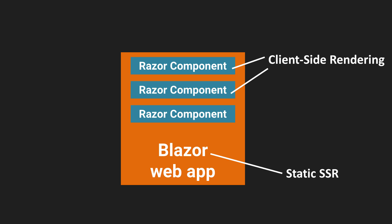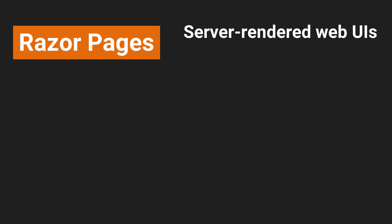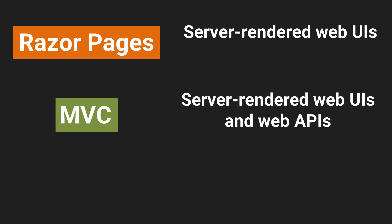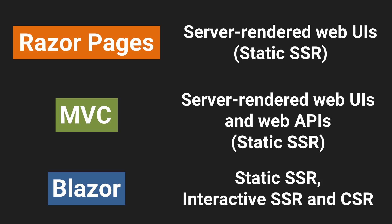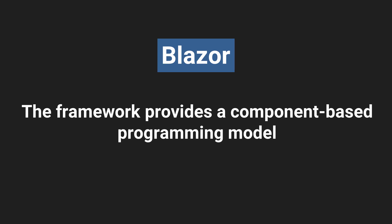In summary, Razorpages lets us build server-rendered web UIs. ASP.NET Core MVC also lets us build server-rendered web UIs, and additionally supports building web APIs. Both Razorpages and MVC use static SSR. Blazor can also build server-rendered web UIs using static SSR, but additionally supports interactive server-side rendering and client-side rendering. A key advantage of Blazor is that it provides a component-based programming model for building web UIs.